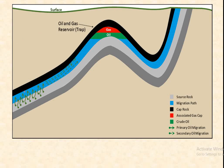This is the surface. In the anticline structure shown, the gray color represents the source rock. Oil migrates via the migration path, and the black band represents the cap rock. Within this anticline, oil and gas accumulate in the reservoir.